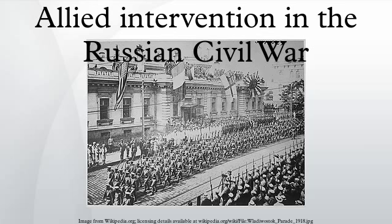This force, which became known as the American North Russia Expeditionary Force, was sent to Arkhangelsk, while another 8,000 soldiers, organized as the American Expeditionary Force Siberia, were shipped to Vladivostok from the Philippines and from Camp Fremont in California.